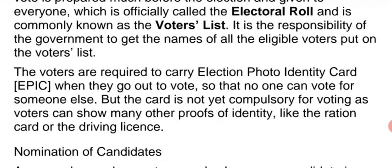Voters are required to carry an Election Photo Identity Card (EPIC) when they go to vote. This identity card proves that the person is eligible and belongs to that area, so that no one can vote on behalf of someone else. However, the card is not yet compulsory for voting, as voters can show many other proofs of identity such as a ration card or driving license.